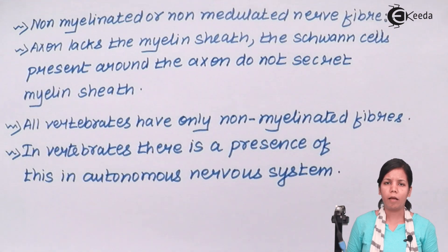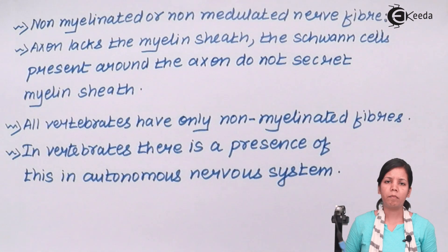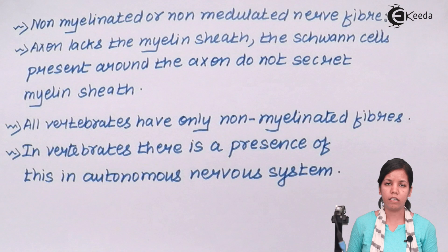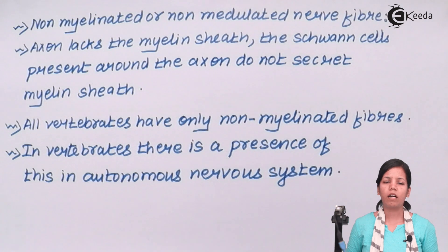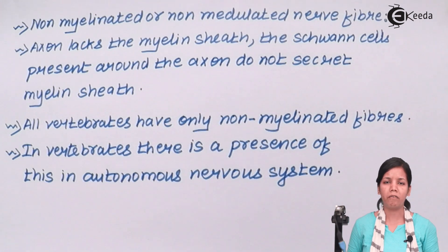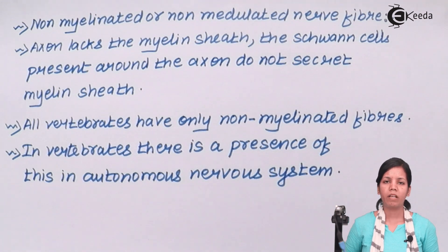Depending upon the other types of neurons present in the body based on their functions, the amount of myelin sheath present in them could vary — it could increase or decrease. In certain arthropods or crustaceans, myelin is present in minute quantity. I hope students are clear with this concept of what a myelinated sheath is and what a non-myelinated sheath consists of. Thank you.